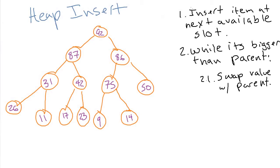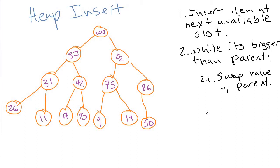Let's do it one more time with the value 100. We don't just go to the top and put it there even though it'll eventually be the root. Instead we start by putting it in the next available slot as the left child of 50. Then since it's bigger than its parent, we swap once, swap again, and swap one more time until it reaches the root. We have to make sure we don't try to get the parent of the root node because there is no parent — once we get to the root, we're done regardless of the value. Let's go back to the Java code and implement this.